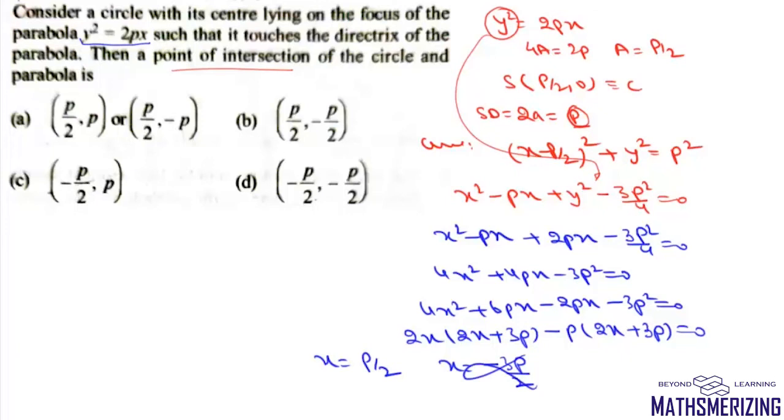Now if I put the value of x = p/2, I'll get y² = p². In that case, the value of y will be simply ±p. So the answer to this question will be (p/2, p) or (p/2, -p), and that's your option number A.